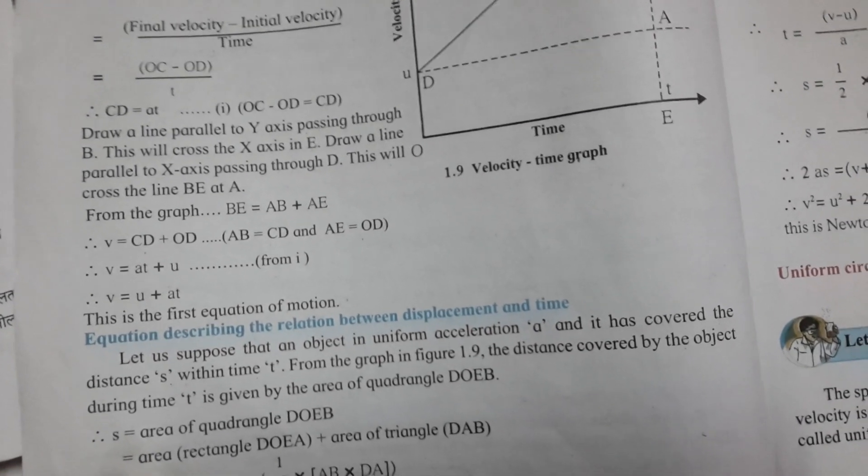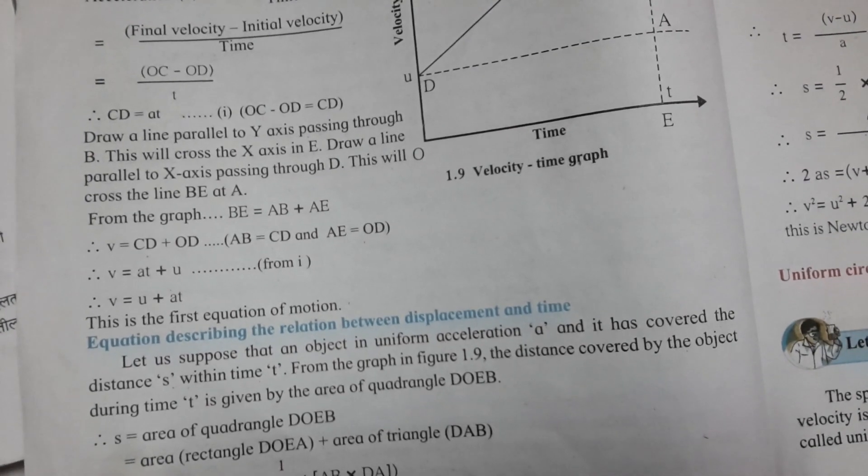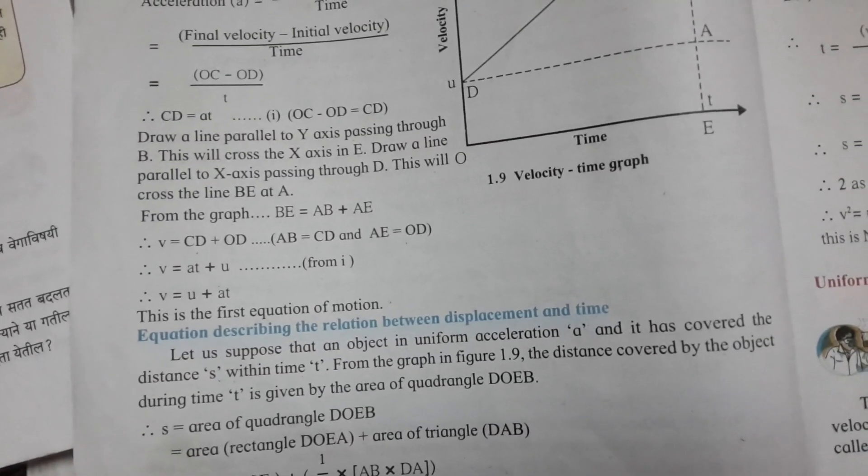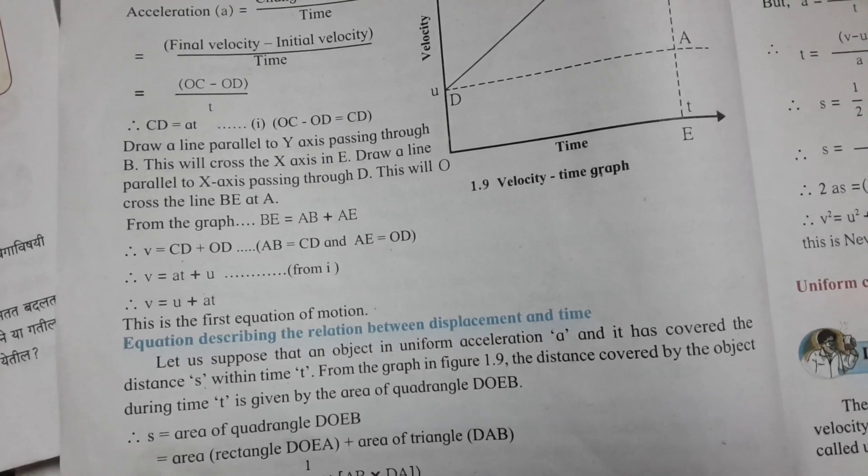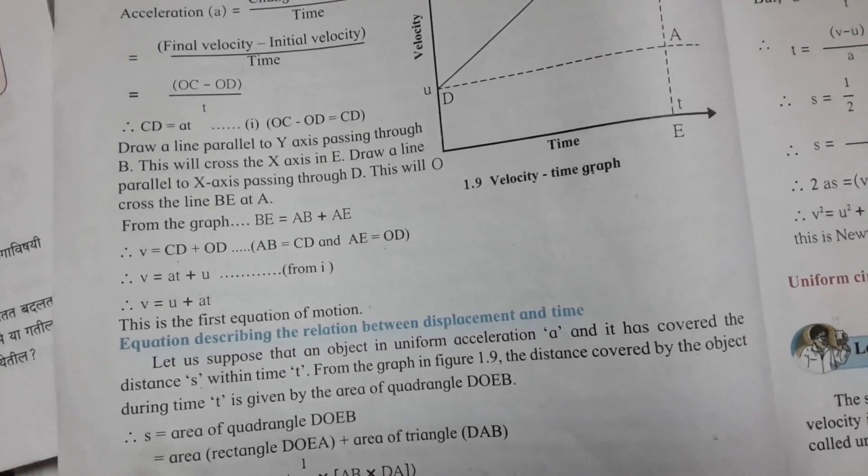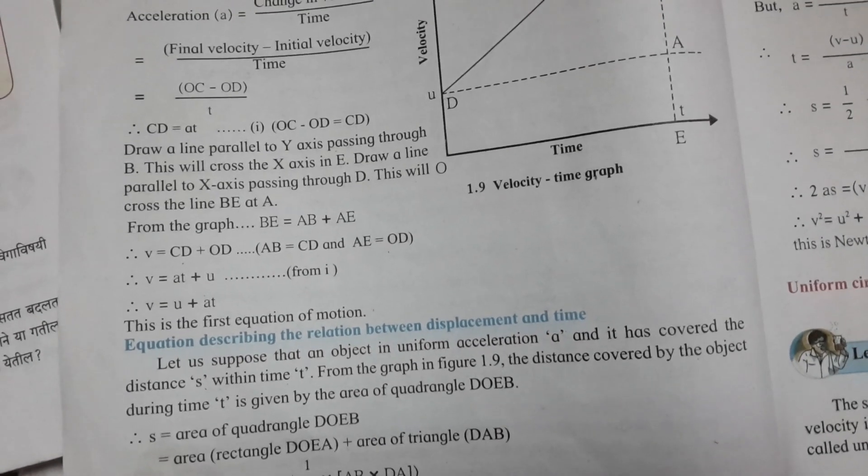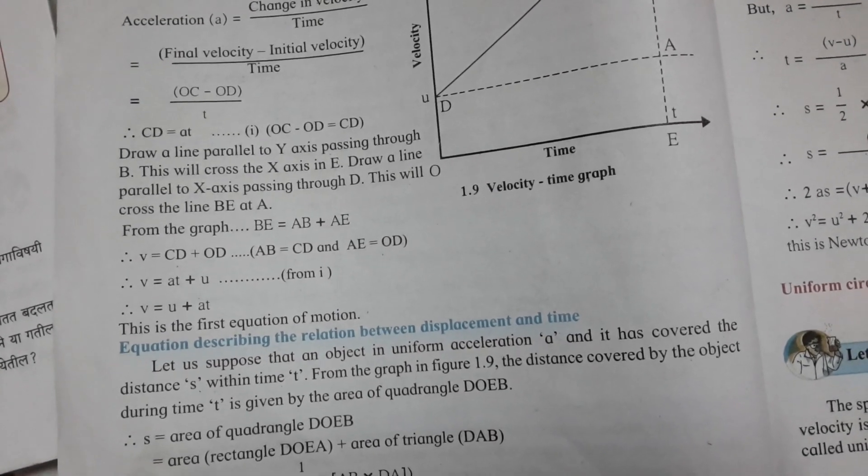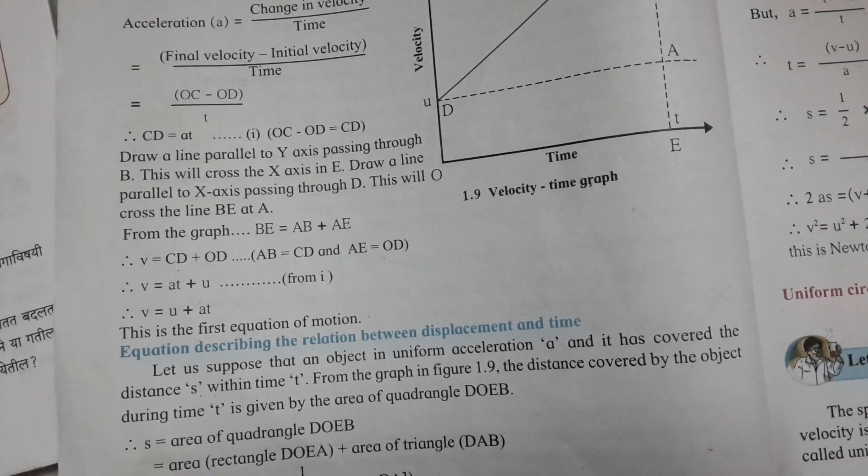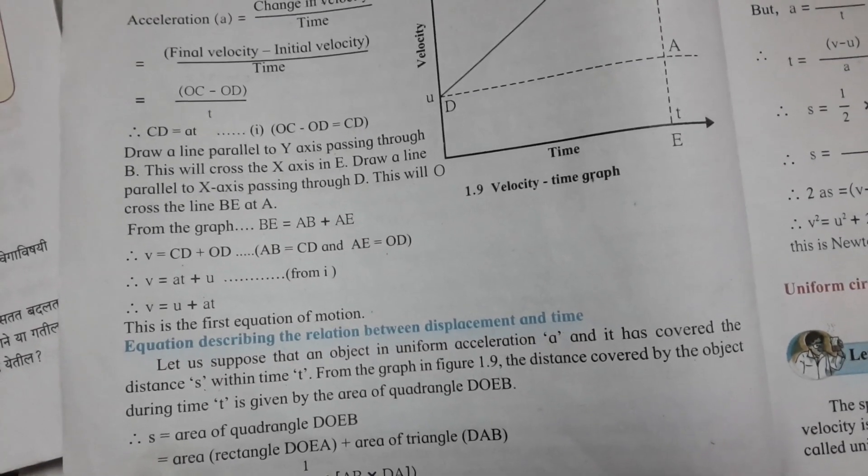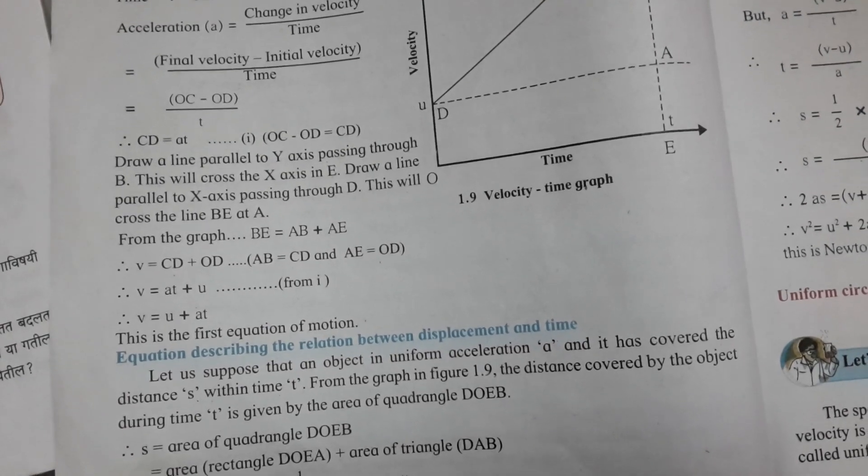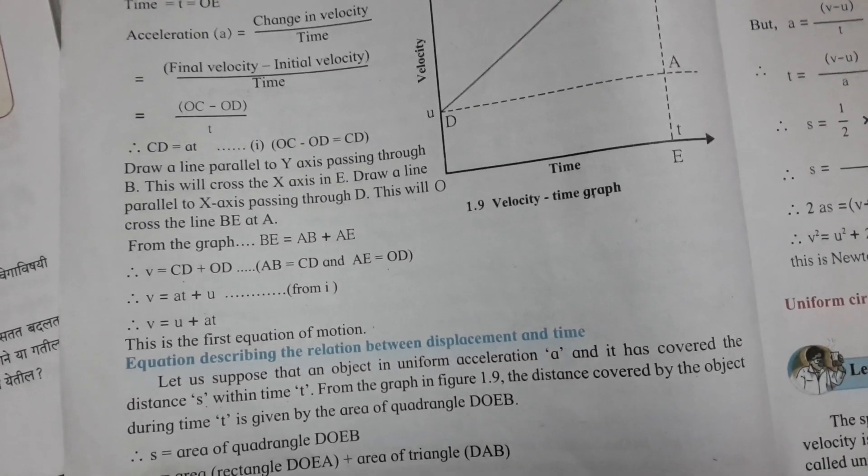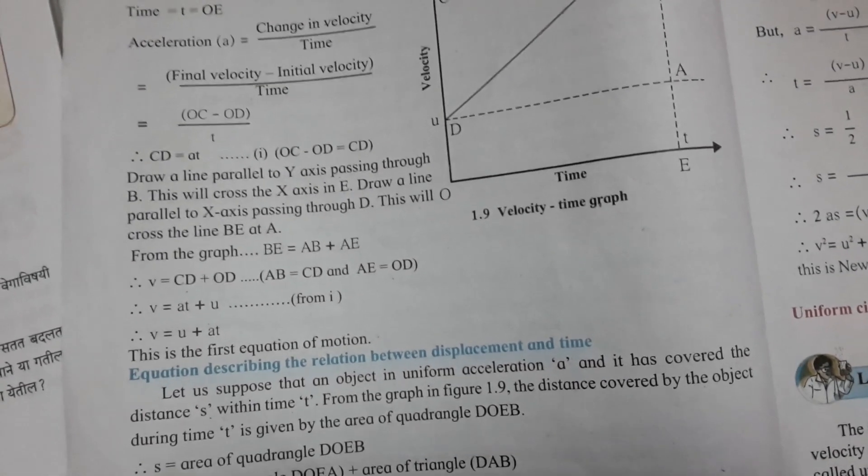From the graph, BE equals AB plus AE. So V equals CD plus OD. We get V equals AB plus U. Just rearranging, V equals U plus AT.